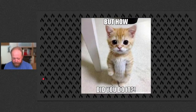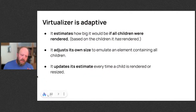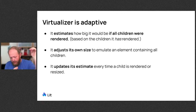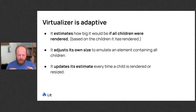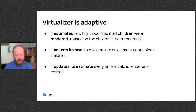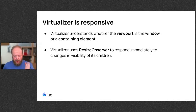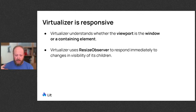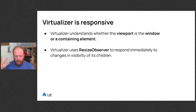How does this actually work? Virtualizer will estimate how big it would be if all its children were rendered by looking at the children it actually renders in the first set. As it makes that estimate, it adjusts its awareness of how big it should be as you scroll through, so it gets a good understanding of your document set and your scrollbars feel real. It's also very responsive if you zoom, increase text size, resize the browser, or if child nodes themselves change their size — it reacts and adjusts in real time.